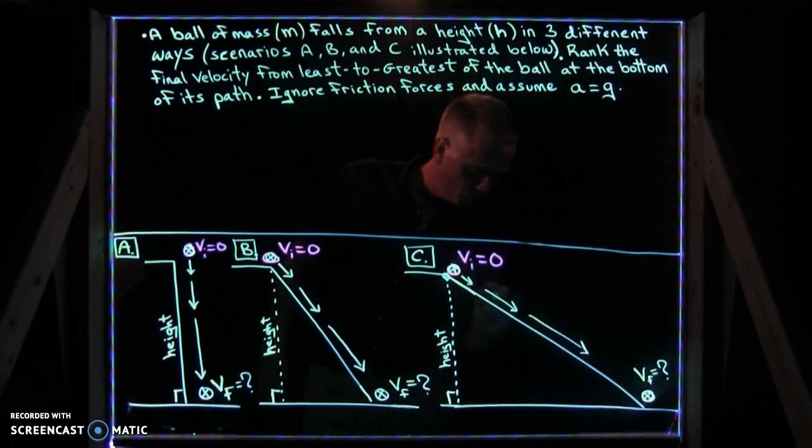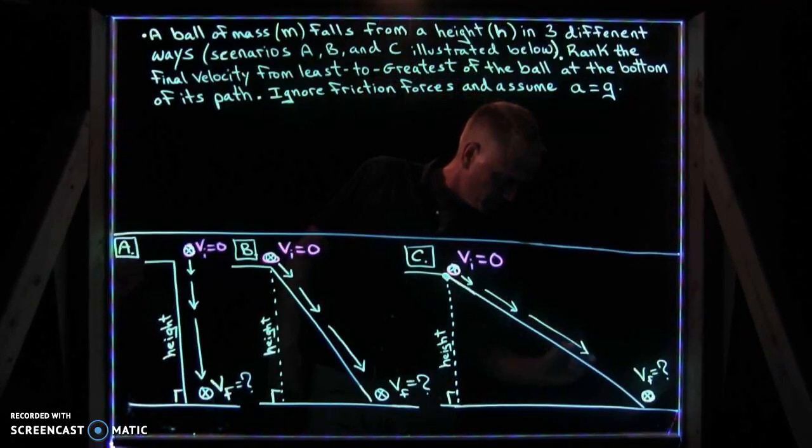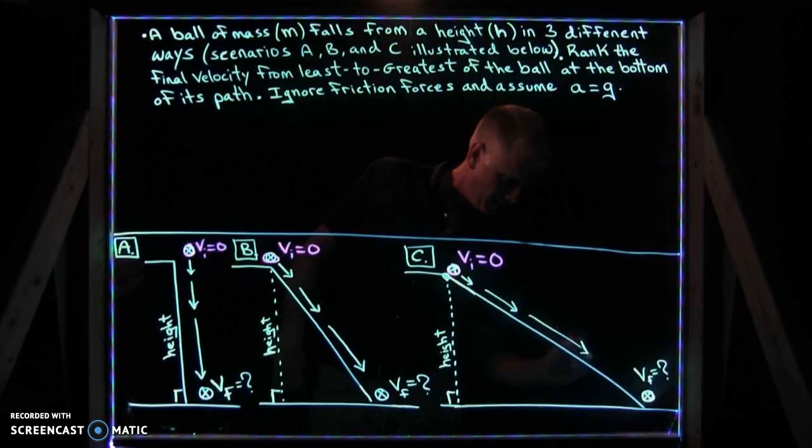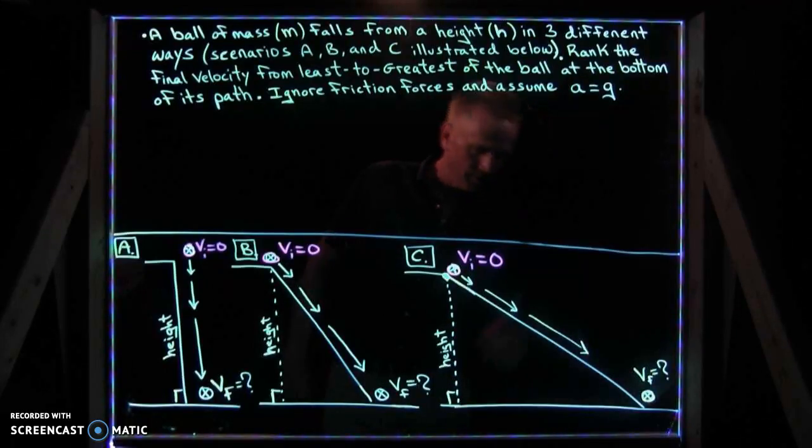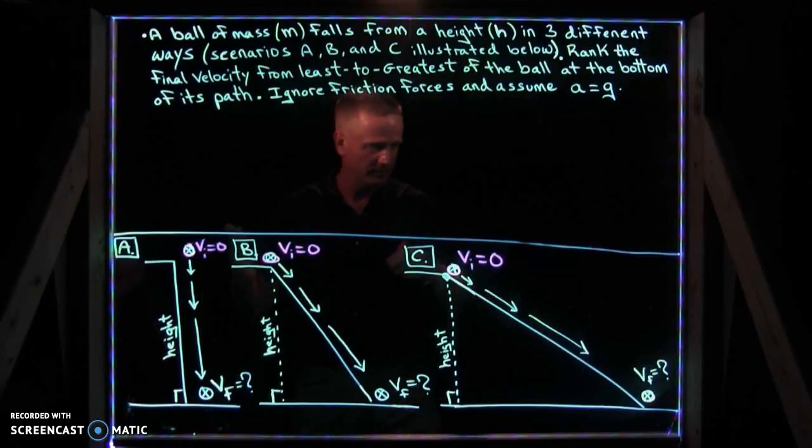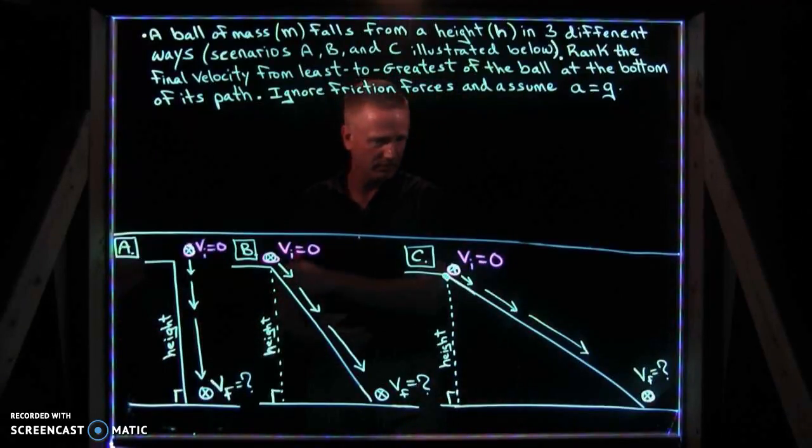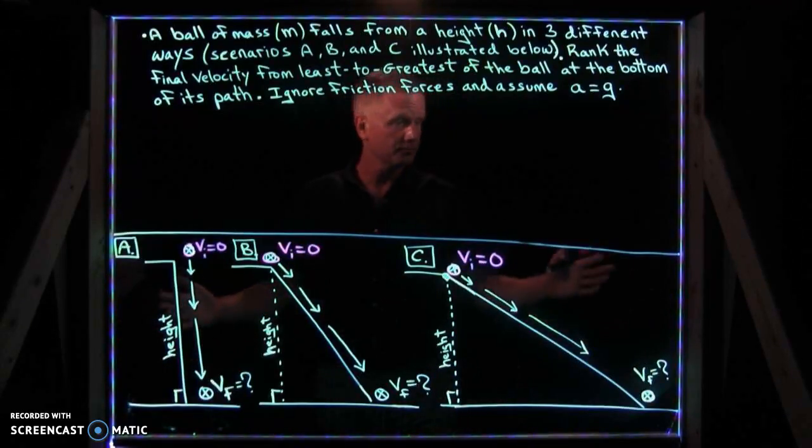Whereas in scenario C, it's going to roll down this ramp a much greater distance and it's going to therefore take a much greater amount of time. And you'd be correct. So you know it's traveling different distances in all three scenarios and it's traveling for different amounts of time in all three scenarios.